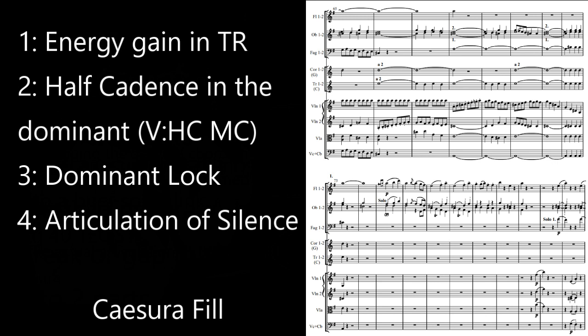In this symphony, we have three of the normative aspects of a medial caesura. There's energy, a half cadence in the dominant of D major, and a lock on that dominant from bar 68 onwards. However, we are missing the fourth, an actual articulation of silence. There is a high A in the flute, which is joined by the oboes in bar 74. Caesurophyll is a fairly common deformation of a sonata's layout, but should still be approached as outside the norm.